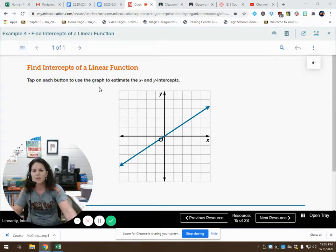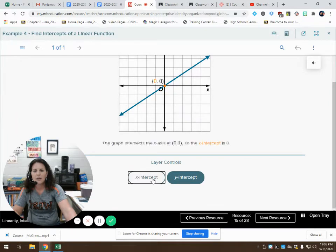We're going to tap on each button to use the graph to estimate the x and y intercepts. We can see that the x and y intercept are actually the same. They're both zero, it looks like, on this graph.